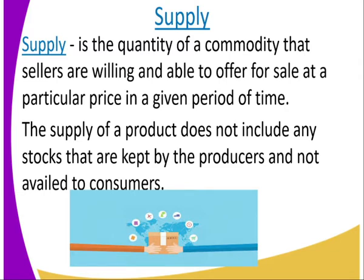As you look at the picture we have here, you can see these sellers. They have released the commodity to those who want to buy, either from outside the country or from within the country. Anybody who is willing to buy at that price — they have released the commodity. That is what we refer to as supply.